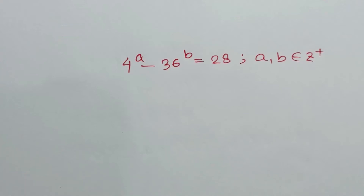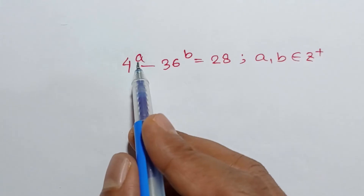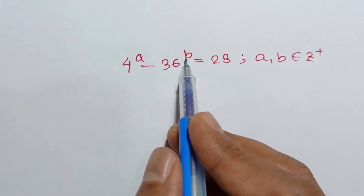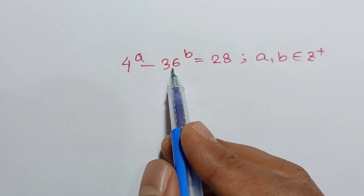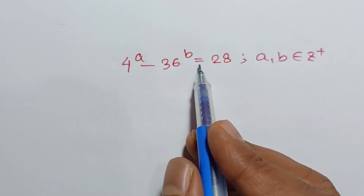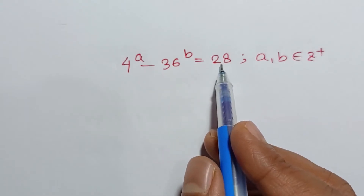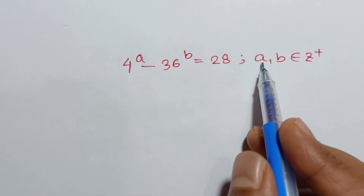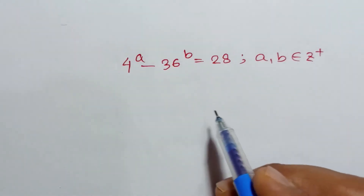Hi everyone. In this video I am going to show how to find the value of a and b, where 4 to the power a minus 36 to the power b is equal to 28, and a and b are positive integers.